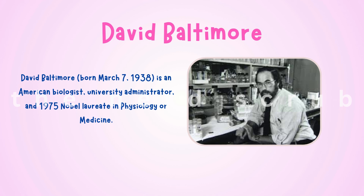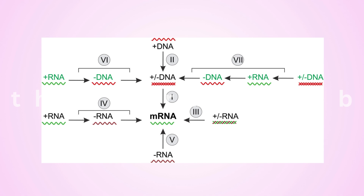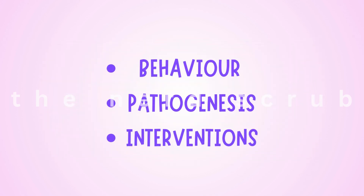David basically introduced this classification system in 1971 and it groups viruses into seven classes based on the type of nucleic acid they possess and how they replicate. This approach helps scientists in understanding the behavior, pathogenesis, and strategies for interventions. So let's check this classification.